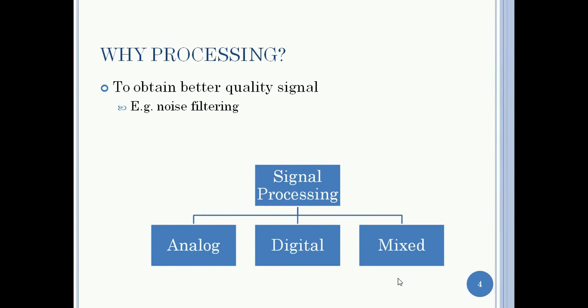So why do we require processing of signals? Taking an example of filtering noise from a noise-corrupted signal, the aim is to remove the noise from the signal in order to obtain a better quality signal. The task of signal processing can be employed in the analog domain, digital domain, or mixed signal domain.